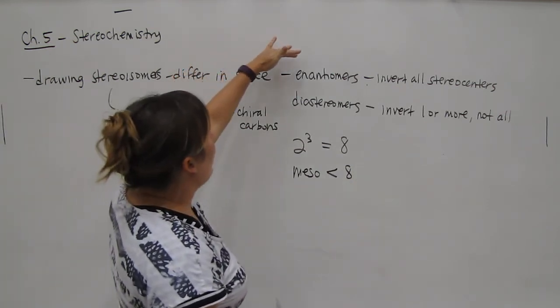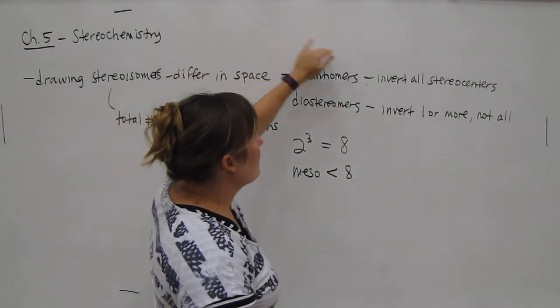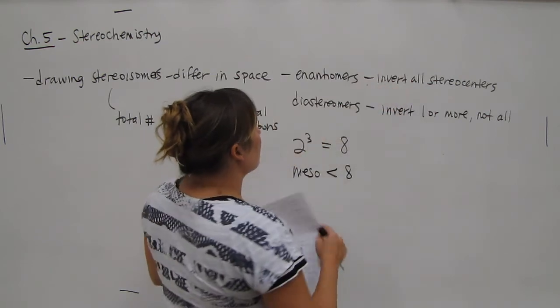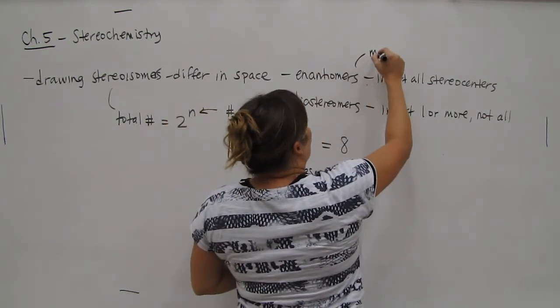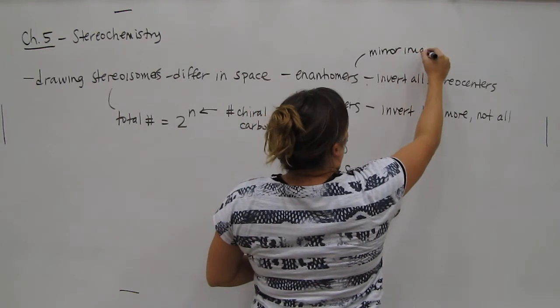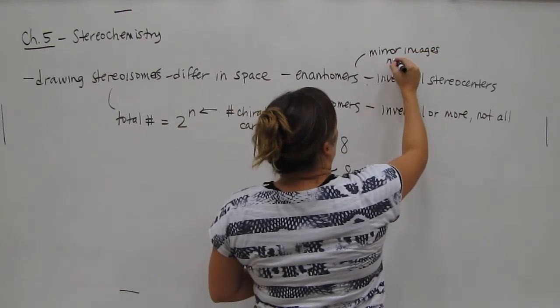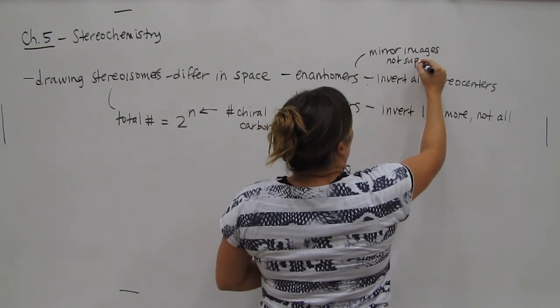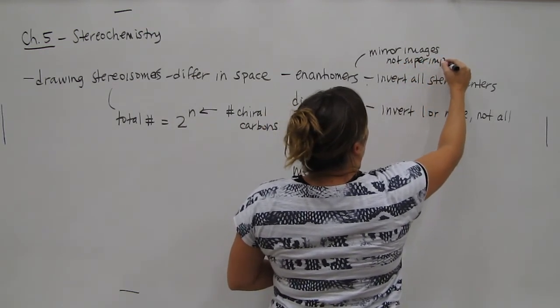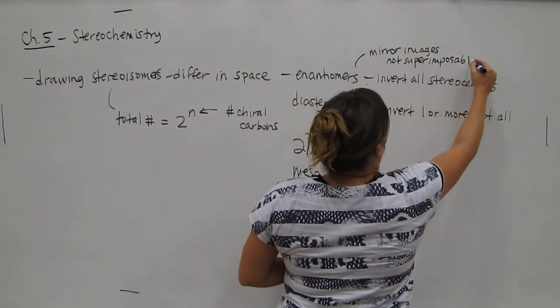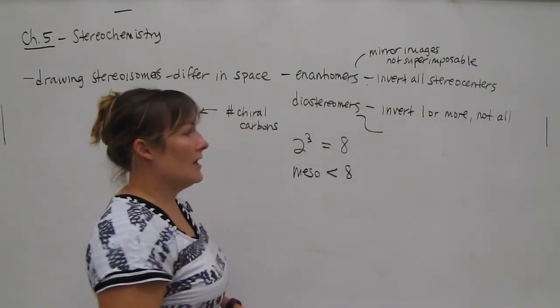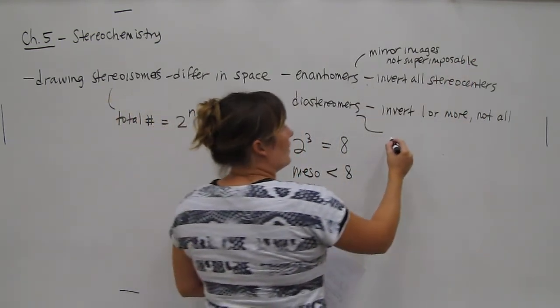And just want to point out here that enantiomers, when you invert all stereocenters, these would be mirror images of each other, but they are not superimposable. Whereas diastereomers, on the other hand, are not mirror images of each other.